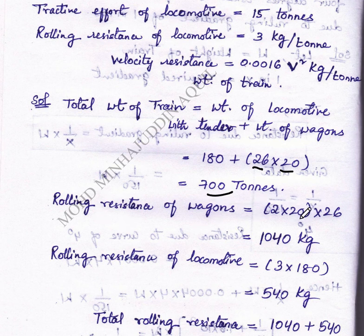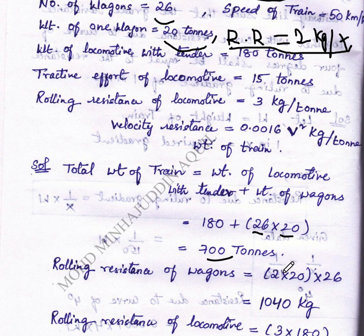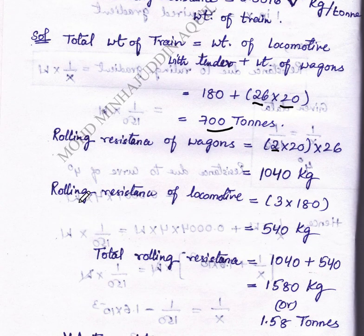Rolling resistance of locomotive equals 2 into 20. Rolling resistance of one wagon is given as 2 kilograms per ton. This value times 20, the weight of one wagon, times 26, the number of wagons, we will get 1040 kilograms.